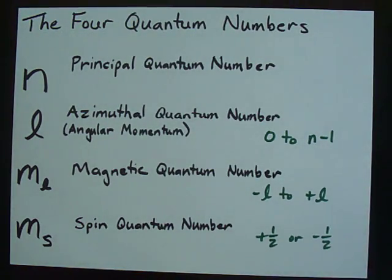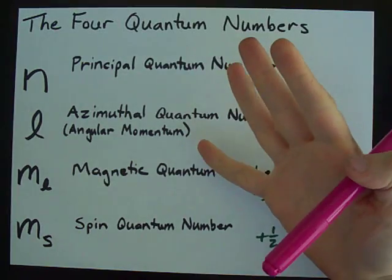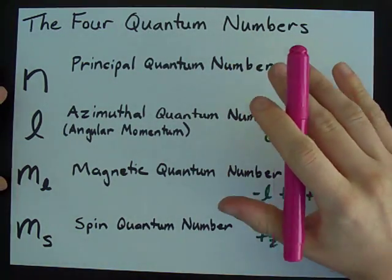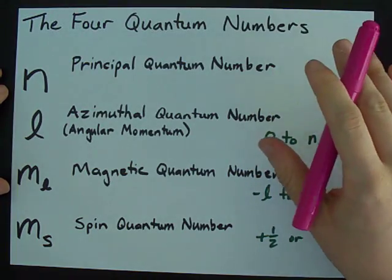I want to explain the four quantum numbers for you. There are four of them and they're really only there so that we can explain the way that electrons are found in atoms all the time.